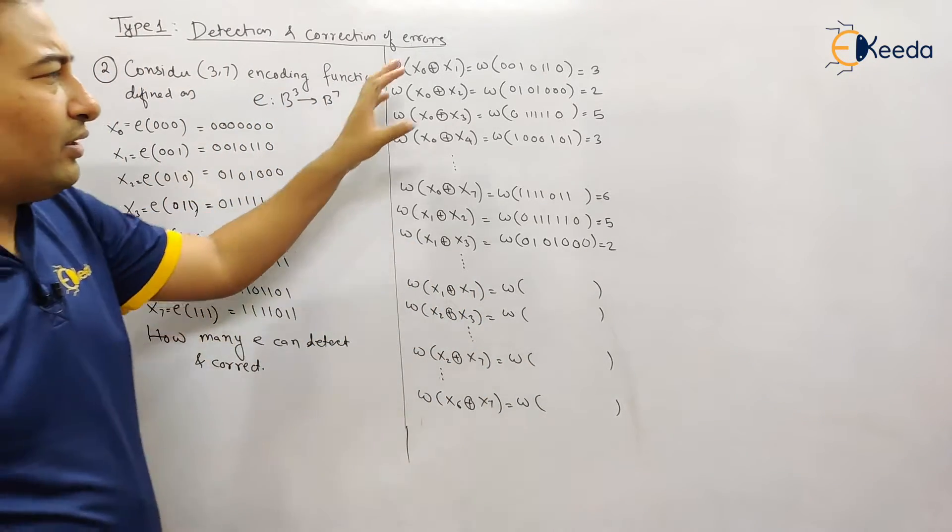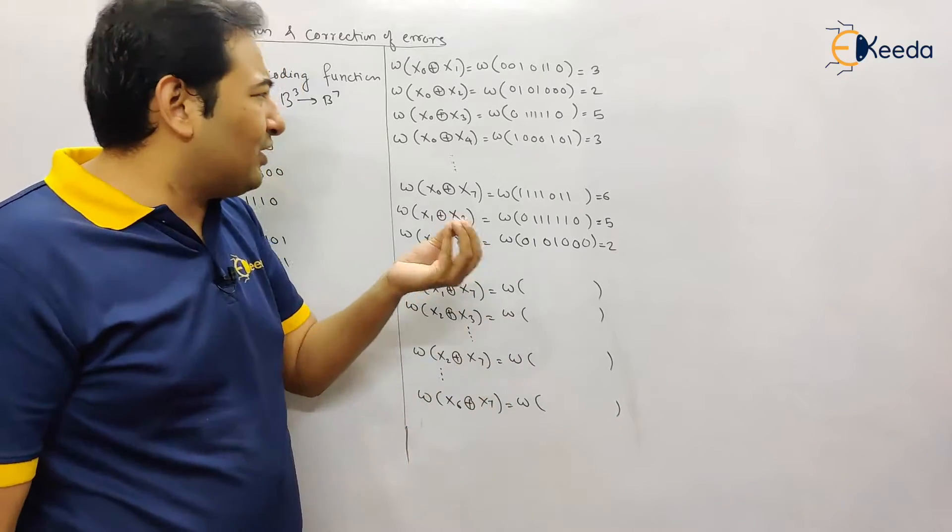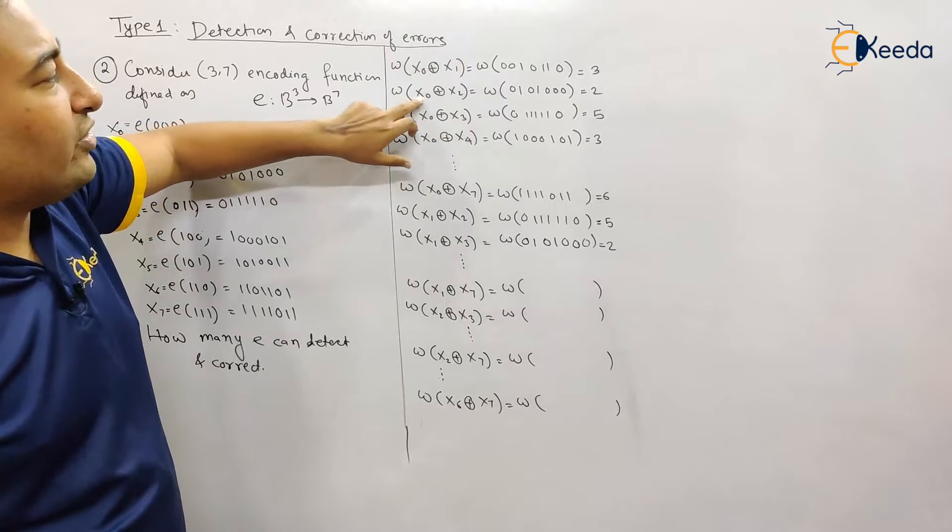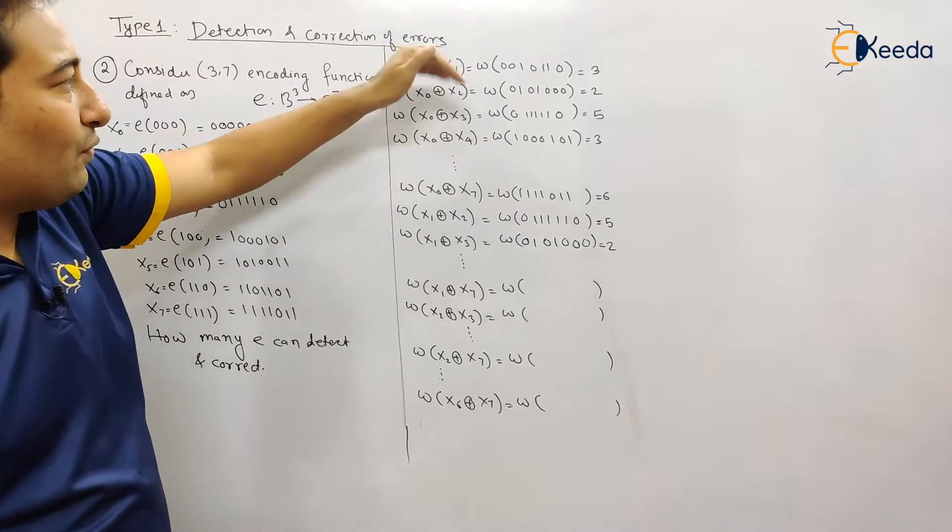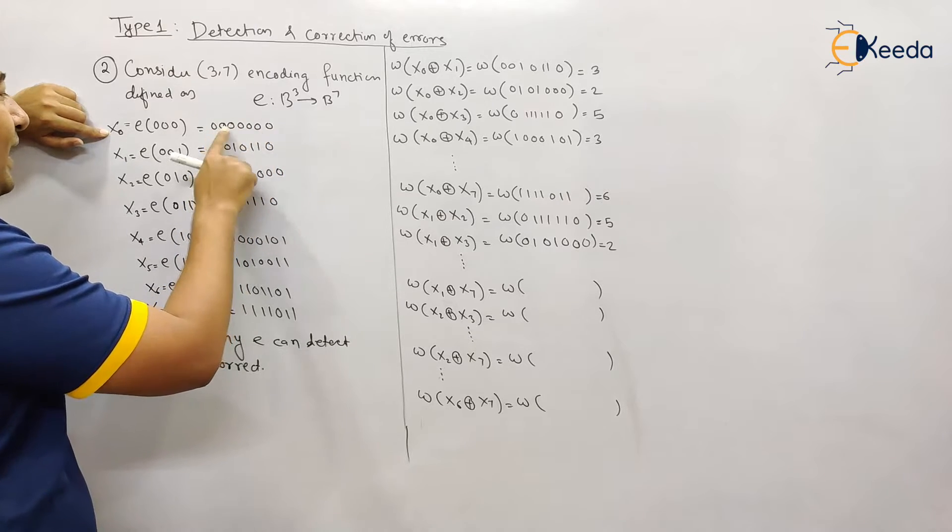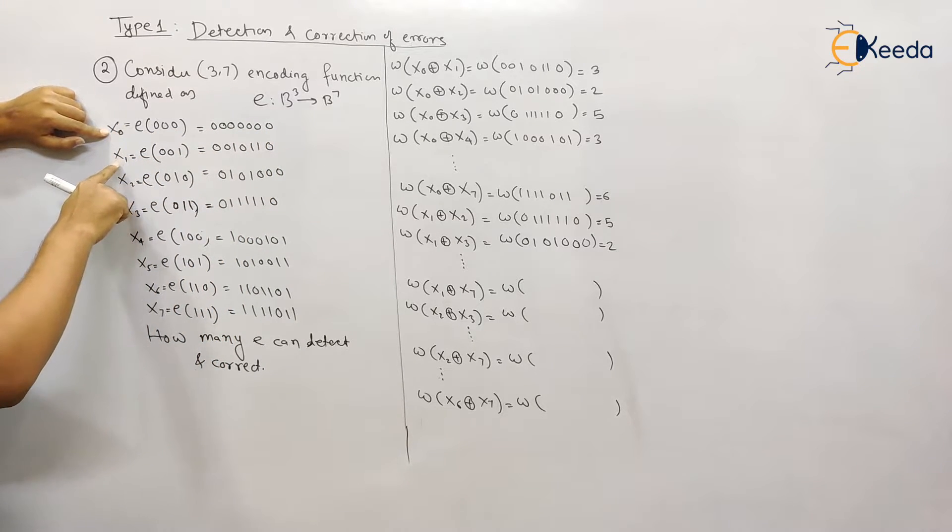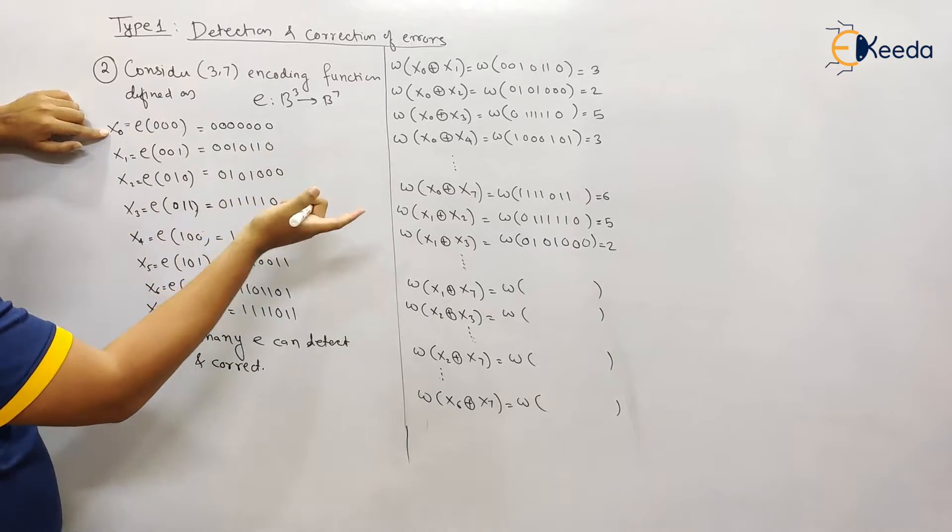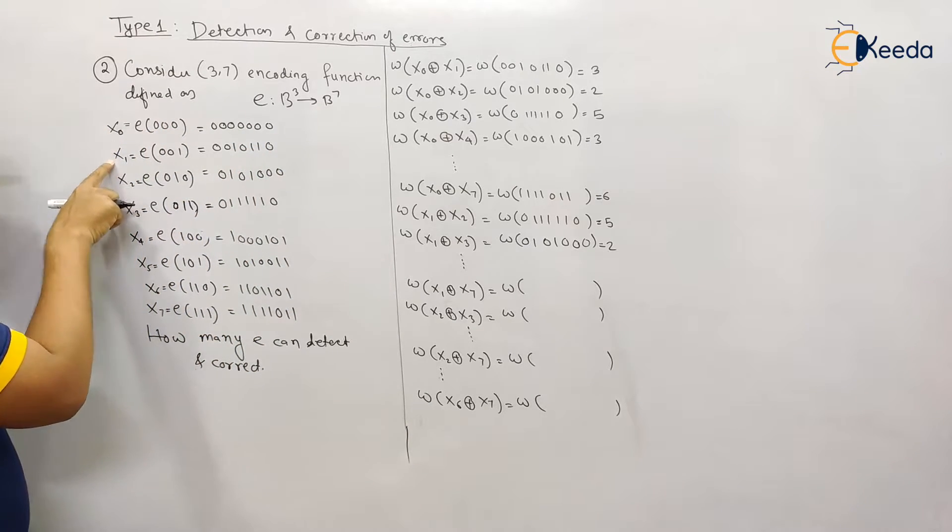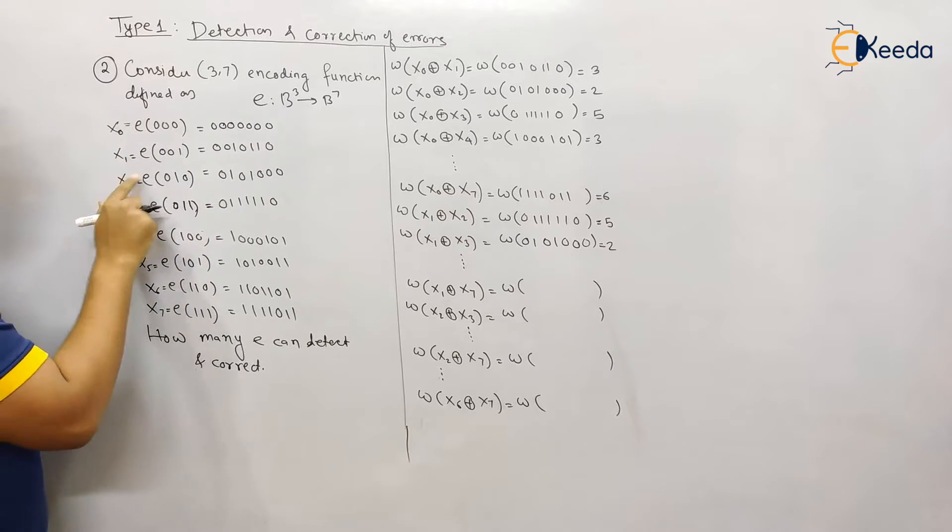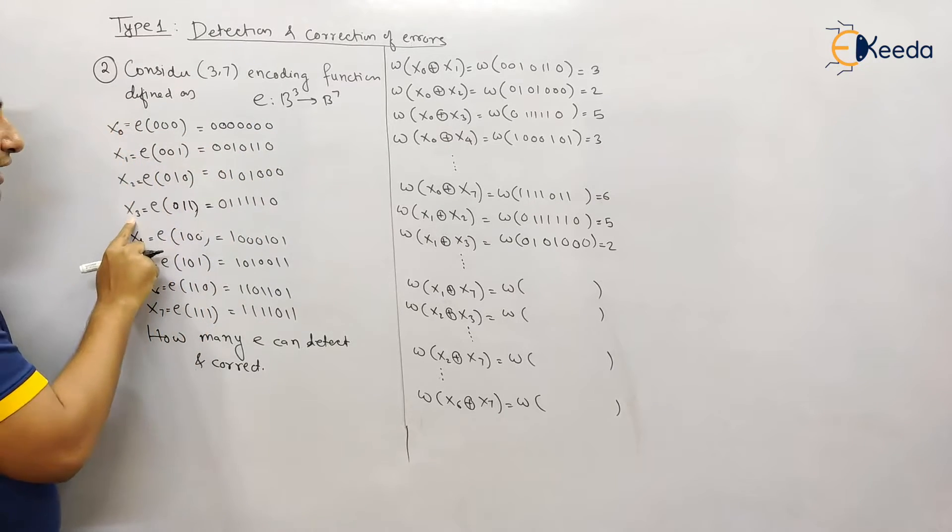First of all, let me show you a few XOR operations just for the sake of understanding. x0 XOR with x1, x0 XOR with x2, x0 XOR x3. See here, x0 is all zeros, so if you take XOR with any term, let's say x1, x2, x3, the result will be the other term. For example, x0 XOR x1 will be this result, x0 XOR x2 will be this result, x0 XOR x3 will be the same result.